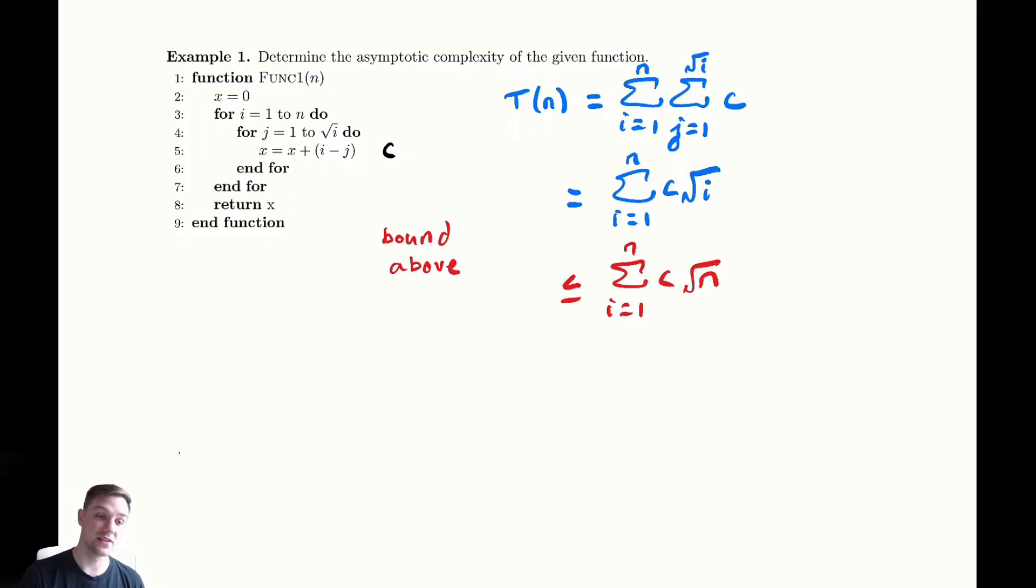So here what I've done is taken the original sumand which was c radical i and replaced it with radical n. By doing that I've replaced all of the smaller terms like radical one, radical two, radical three with the biggest term radical n.